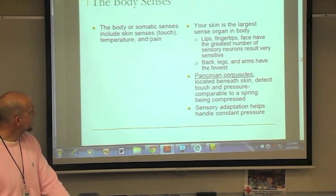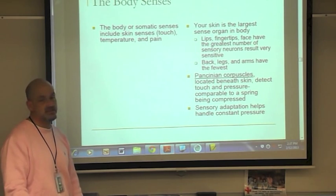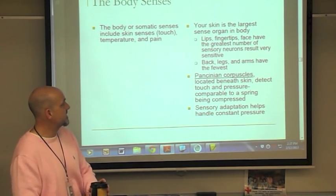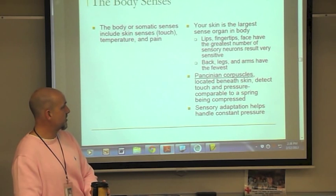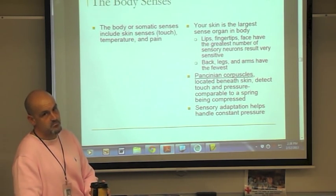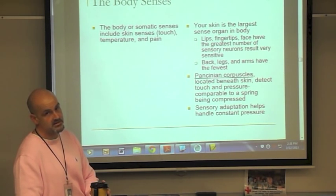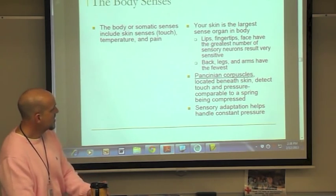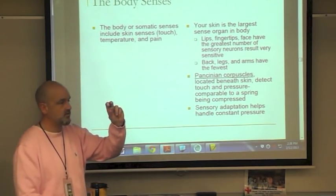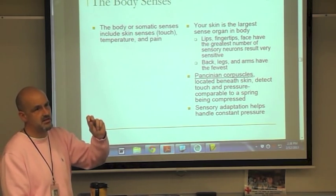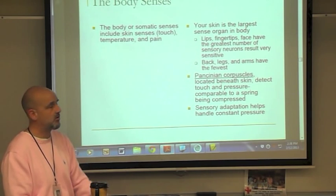The body senses — somatic senses — include touch, temperature, and pain. Your skin is the largest sense organ in the body. Lips, fingertips, and the face have the greatest number of sensory neurons and are most sensitive. The back, legs, and arms have the fewest. Pacinian corpuscles are located beneath the skin and detect touch and pressure — comparable to a spring that, when compressed, sends a signal to the brain. Sensory adaptation helps handle constant pressure: when you put on glasses, at first you feel them, but you eventually lose sensitivity to their weight.